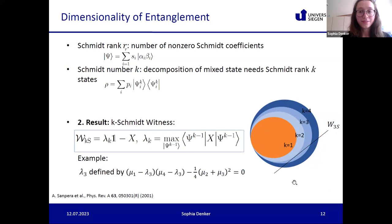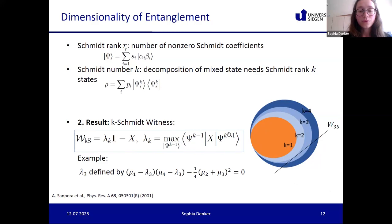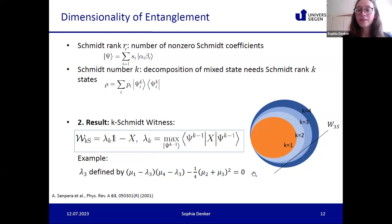This leads to the second result: the k-Schmidt witnesses, written as lambda_k times identity minus X, where lambda_k is obtained by maximizing the expectation value of X over all pure states with Schmidt number k minus one. For Schmidt number three, computing lambda_k reduces to solving a second-order polynomial, which is still nice; for higher Schmidt numbers it becomes more involved but not complicated to compute.